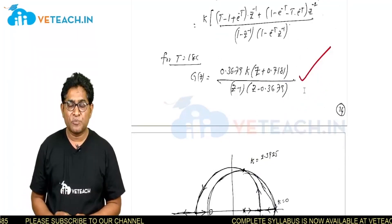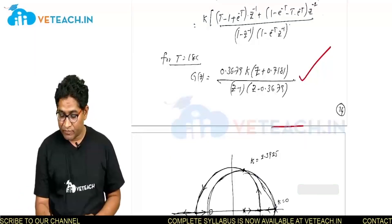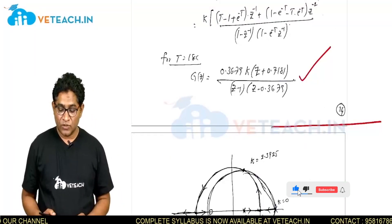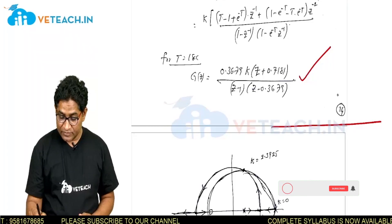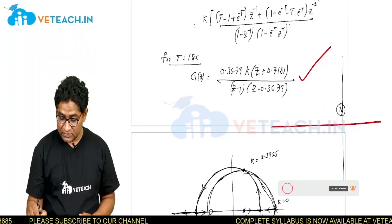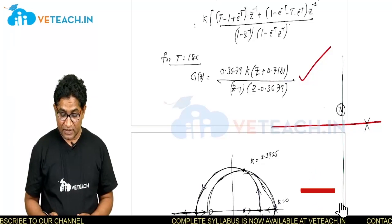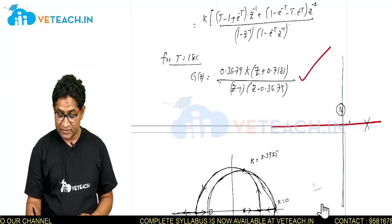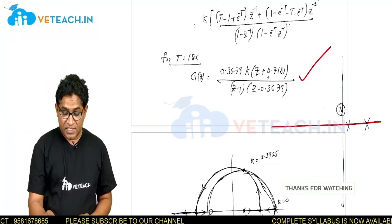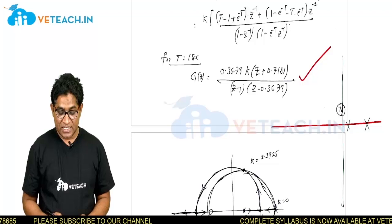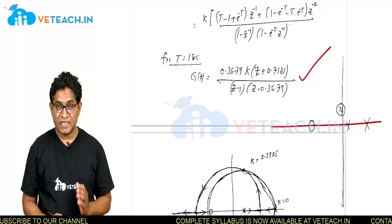Now let us draw the root locus. First, locate the open loop poles and zeros. There is an open loop pole at z = 1, another pole at z = 0.3679, and an open loop zero at z = −0.7181.